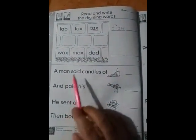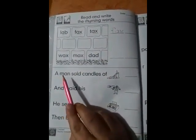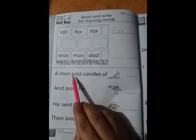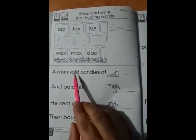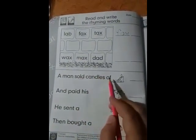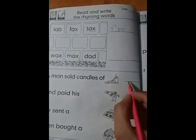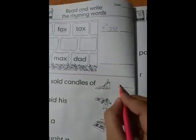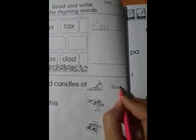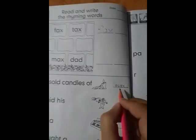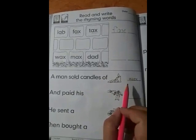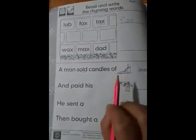Now let's start the reading of sentences. A man, a man, a man sold, sold, sold, sold, sold, candles of wax. Now we write the name. O ax, wax. O ax, wax. A man sold candles of wax. Good, read loudly and repeat again and again.